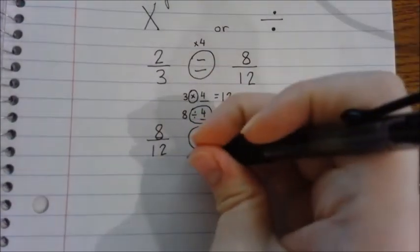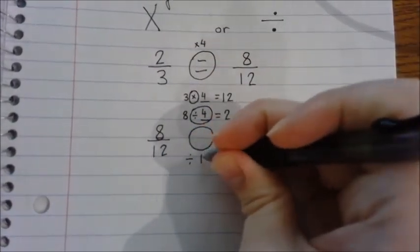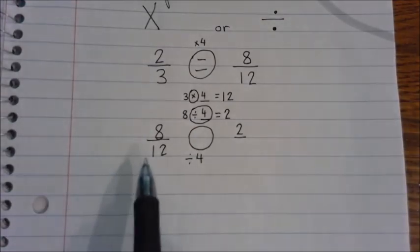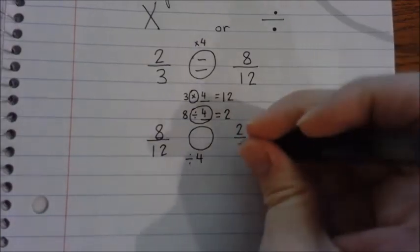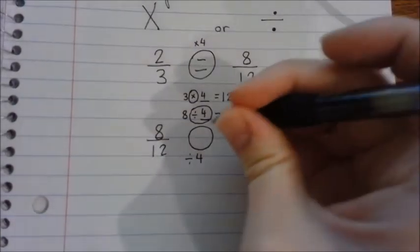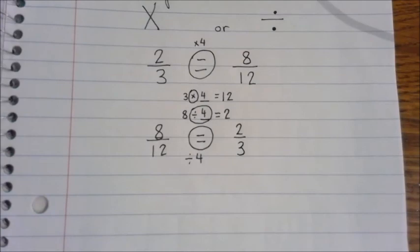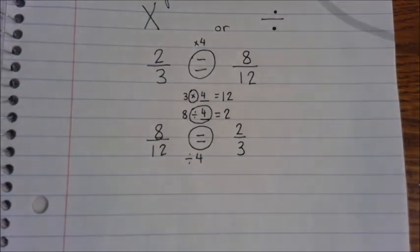Down here I also need to divide by 4, so 12 divided by 4 is - let's count up our multiples: 4, 8, 12 - that would be 3. So again, these would be equal.